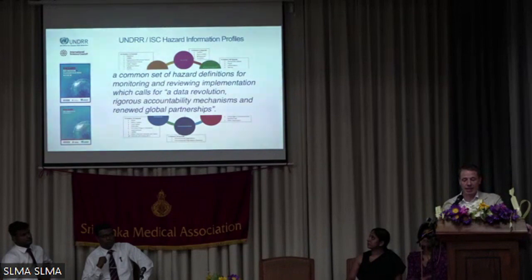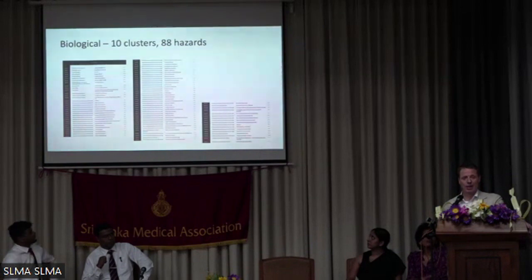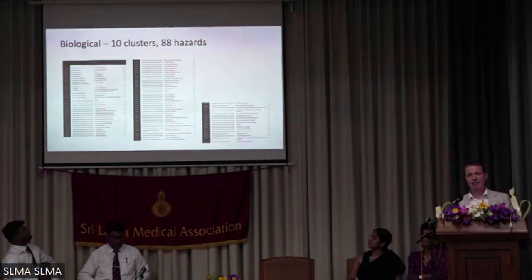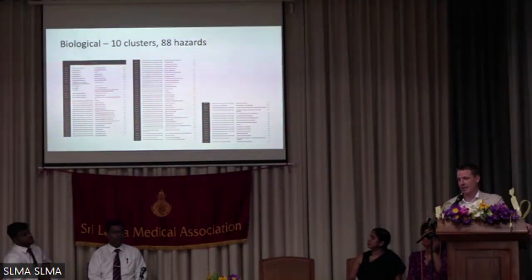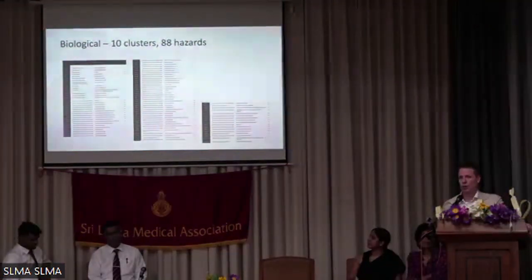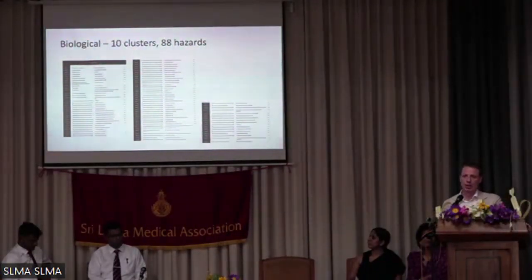They identified nine different groupings of hazard types in this typology. For example, when you look at biological hazards, they further categorise 10 different clusters of hazards, and in total in the biological section there are 88 different hazards picked out and categorised. They tried to set a framework for a multi-hazard approach, with a common definition that we can work towards.